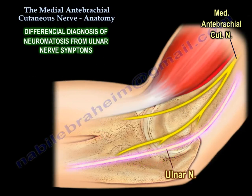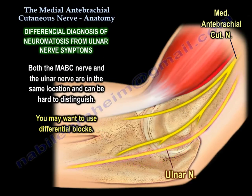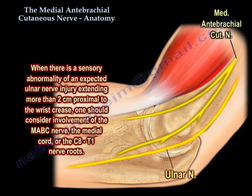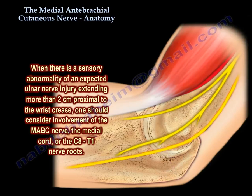Differential diagnosis: neuromatosis versus ulnar nerve symptoms. Both the Medial Antibrachial Cutaneous Nerve and ulnar nerve are in the same location and can give the same symptoms, making them hard to distinguish. Differential blocks and an elaborate clinical exam may be used to differentiate between them. When there is a sensory abnormality of an expected ulnar nerve injury extending more than 2 cm proximal to the wrist crease, one should consider involvement of the Medial Antibrachial Cutaneous Nerve, the medial cord, or C8-T1 nerve roots.